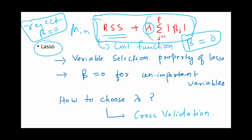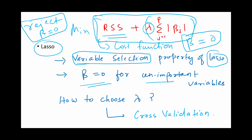Given that beta values become zero, lasso is considered to be a variable selection method, not ridge. Although ridge is sometimes considered very helpful, but from a variable selection point of view, lasso is actually very useful. Beta is zero for unimportant variables — that's the idea.